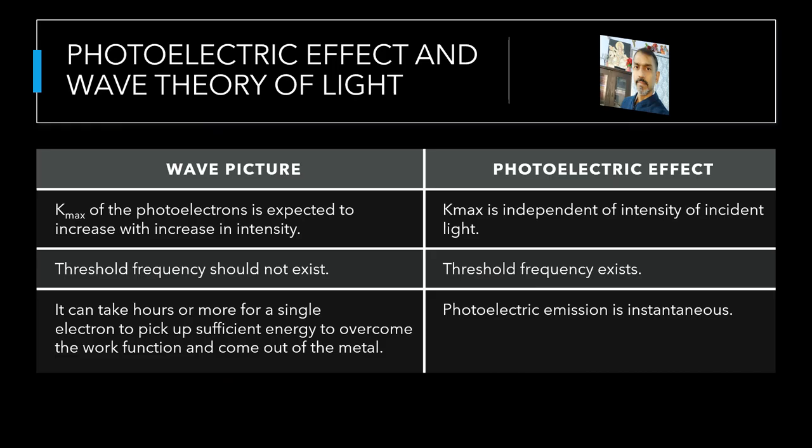According to the wave picture of light, the free electrons at the surface of the metal over which the beam of radiation falls absorb the radiant energy continuously. The greater the intensity of radiation, the greater are the amplitude of electric and magnetic fields. Consequently, the greater the intensity, the greater should be the energy absorbed by each electron. In this picture, the maximum kinetic energy of the photoelectrons is expected to increase with increase in intensity.